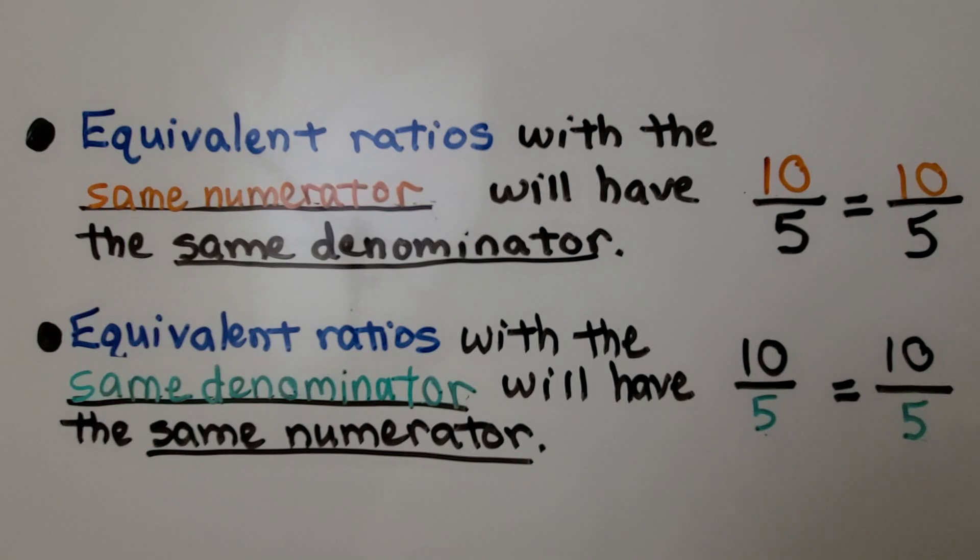Equivalent ratios with the same numerator will have the same denominator, and equivalent ratios with the same denominator will have the same numerator.